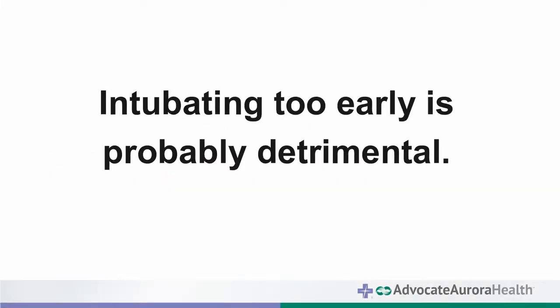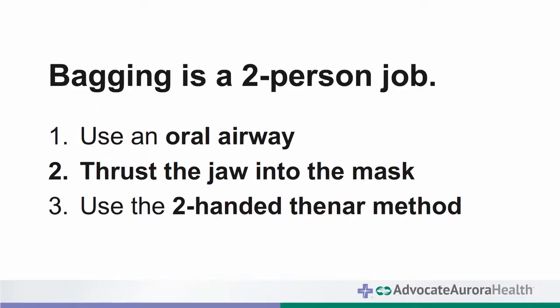Regarding airway timing: intubating too early is probably detrimental. Focus on compressions. Before starting intubation, have the team and room organized, pads on, chest compressions going, and preferably a mechanical CPR device in place so you're not disrupting compressions while moving equipment around. Intubating within the first couple of minutes is probably detrimental; around the 90-second to 120-second range is probably a good time. But if you're getting effective bag-mask ventilation, you could continue that, or use a supraglottic device like an LMA or King Airway for the entire code without worrying about intubation until ROSC.